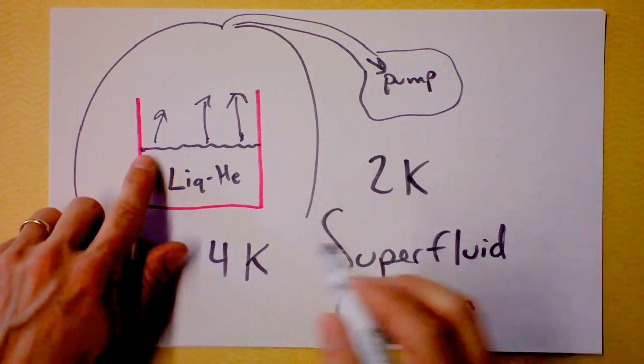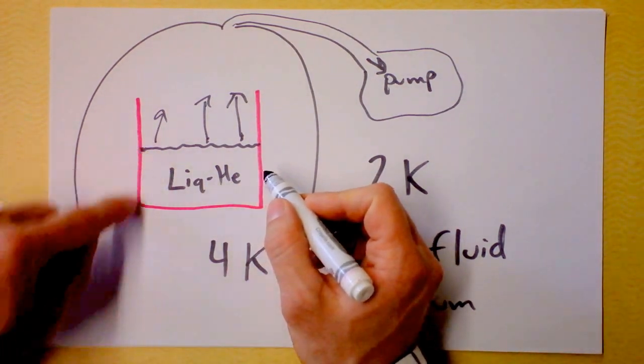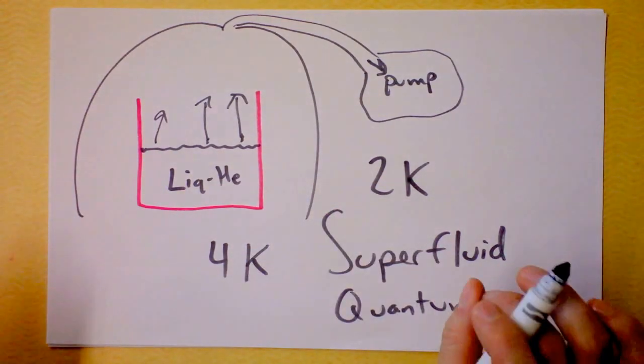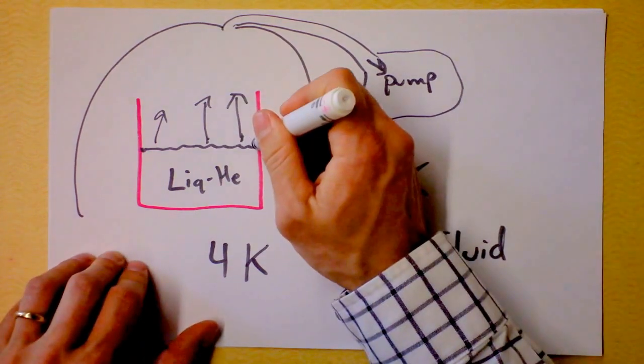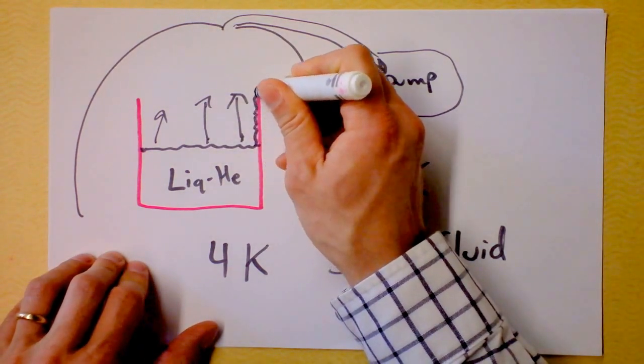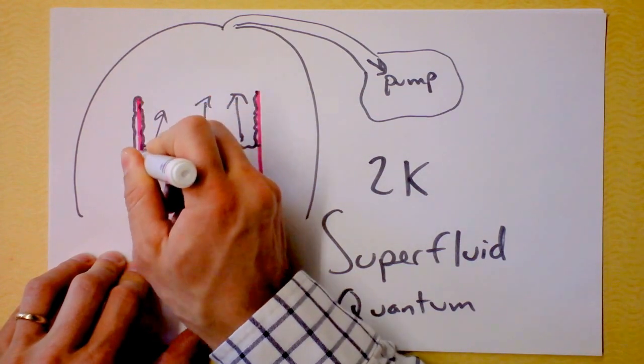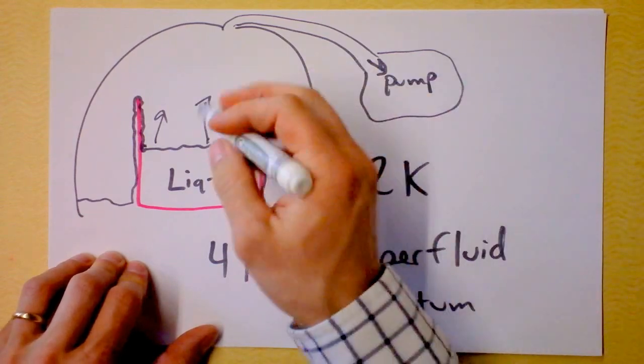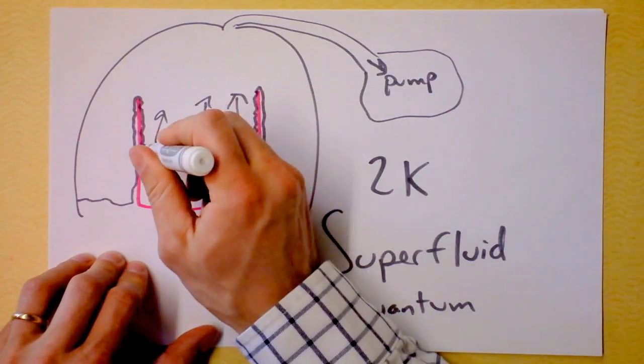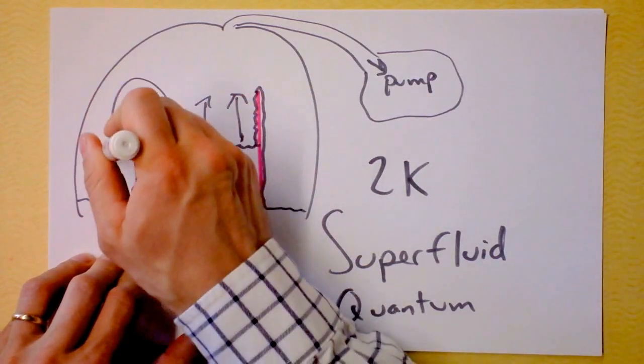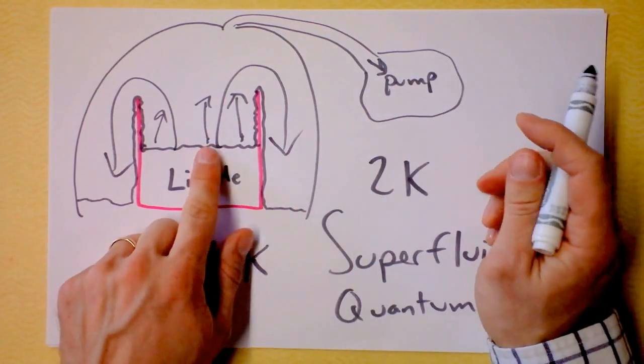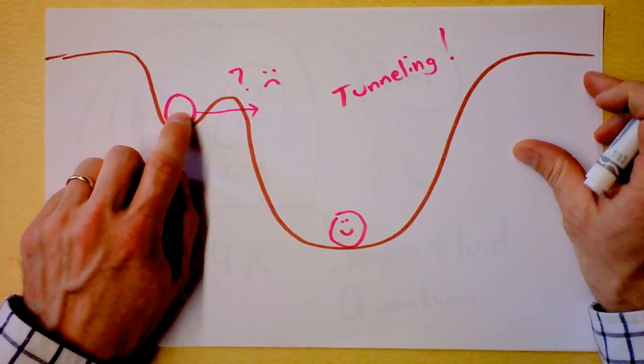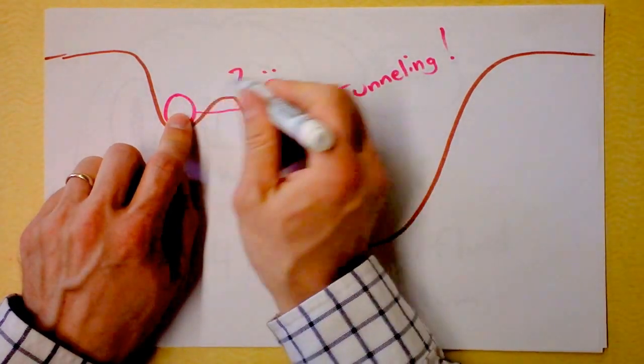And this quantum fluid then sees that it could reduce its energy by crawling out of the container. A quantum fluid knows where you've got it trapped. And the liquid helium crawls up the edges like this and comes down here and spreads out on your table. And eventually the entire substance of liquid helium will go out that direction because it knows it can ultimately reduce its energy.